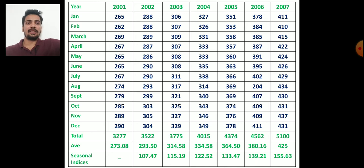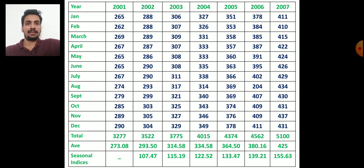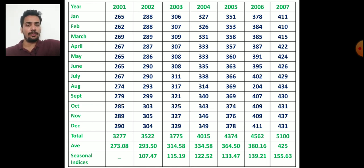The second step is to calculate the average for each year using grand total divided by 12. Then we calculate the seasonal indices using the formula: average of a particular year divided by the base year (2001) multiplied by 100. The seasonal indices are: 2002 = 107, 2003 = 115, 2004 = 112, 2005 = 113, 2006 = 113, and 2007 = 155.